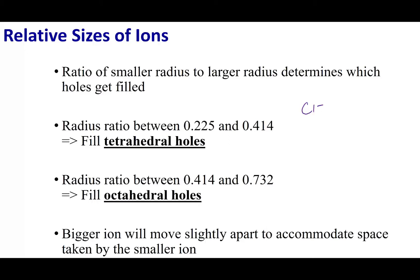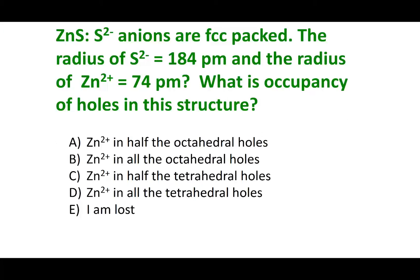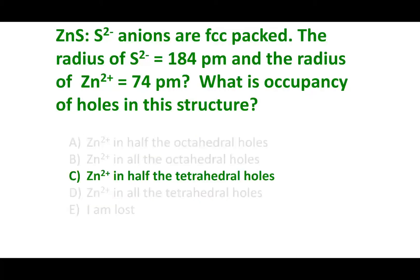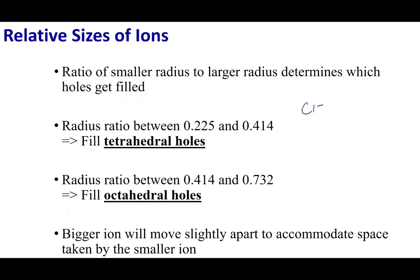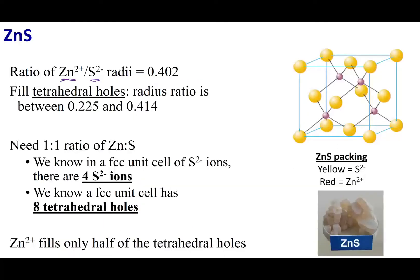Let's look at a quiz question on zinc sulfide. This structure is FCC packed. Taking the ratio of the radii — smaller ion over larger ion — we get 0.402. Based on the previous slide, since 0.402 falls between 0.225 and 0.414, we are going to fill tetrahedral holes.